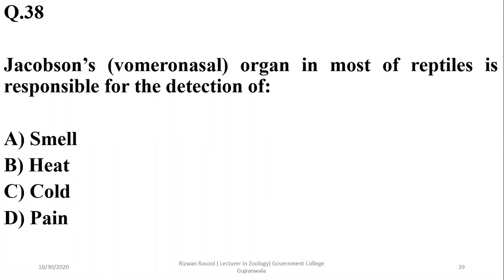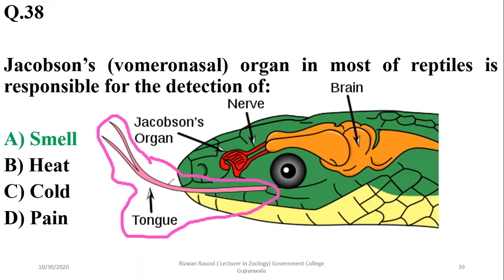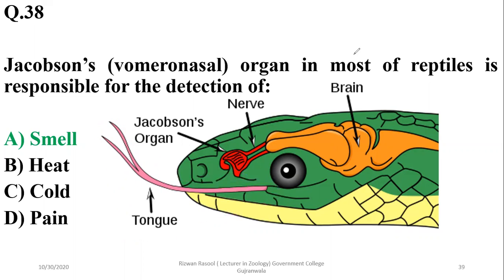Question thirty-seven: Jacobson's or vomeronasal organs in most reptiles are responsible for the detection of smell. The tongue is involved in providing chemicals from the air to the vomeronasal organ by detecting different chemicals in the air. The correct option is alpha.